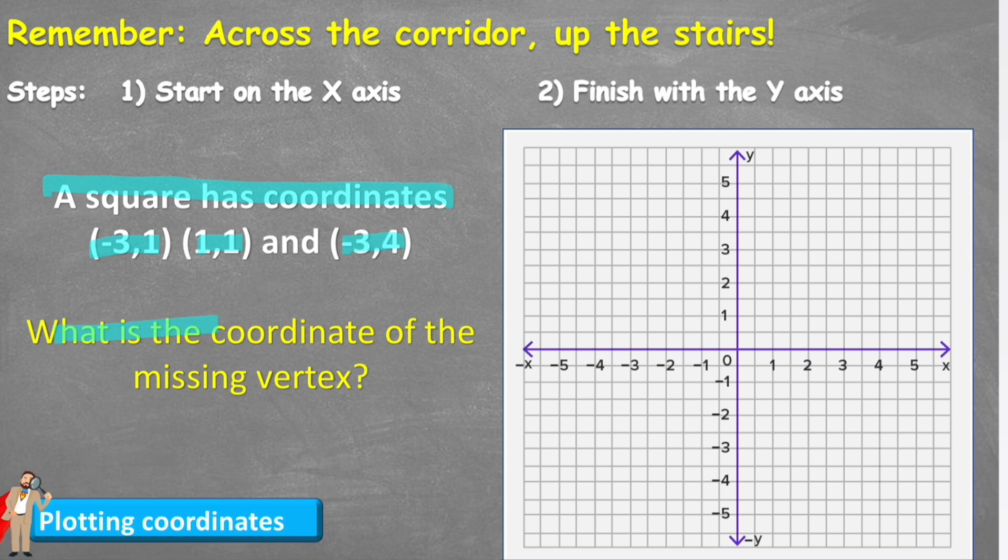What is the coordinate of the missing vertex? Vertex being the corner. Well, let's plot our three coordinates that we've got. (-3,1) would be negative three and one. Therefore, joining these two lines would look like that. Mark the cross, that would be my first vertex.